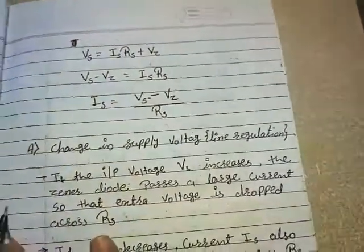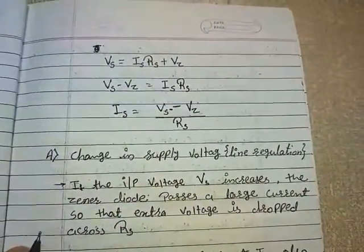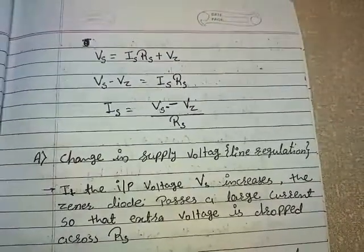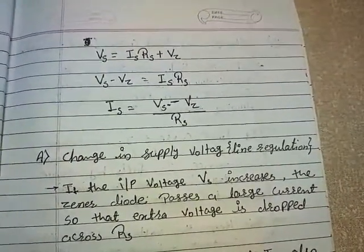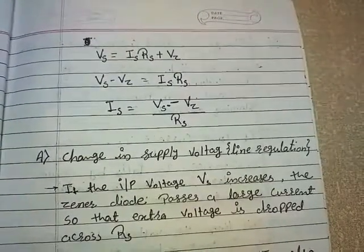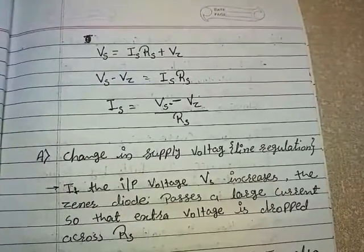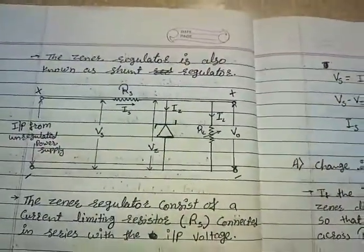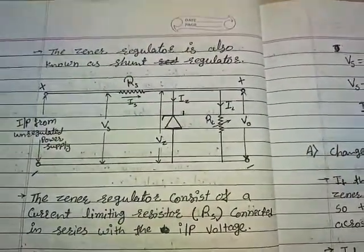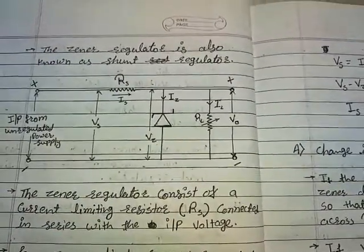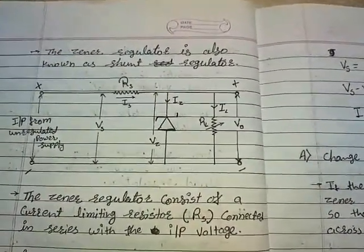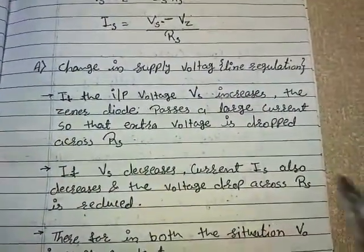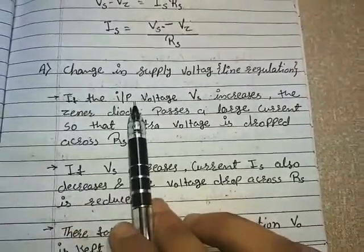In the previous lecture we learned that for a good voltage regulator the line regulation and load regulation should be minimum. Let's see whether this zener diode used as a voltage regulator is able to provide good line regulation and load regulation. First we will look at line regulation.